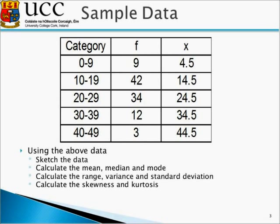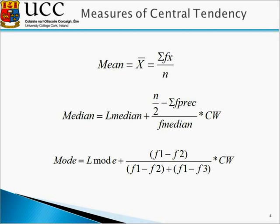We're given a data set where we have categories ranging from 0 to 9 up to 40 to 49. We have a frequency distribution showing the number of people which fall within each category, and we have x, which is the midpoint of each category. We'll be calculating the various measures highlighted on the previous slide, starting with our measures of central tendency — the mean, or x-bar.